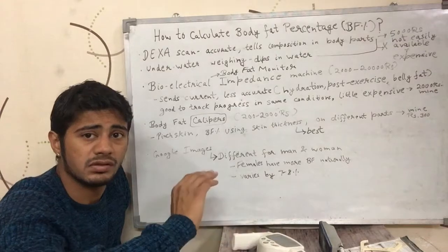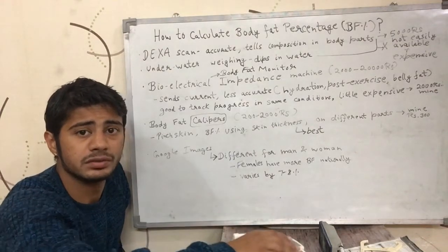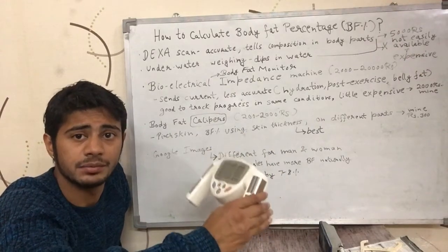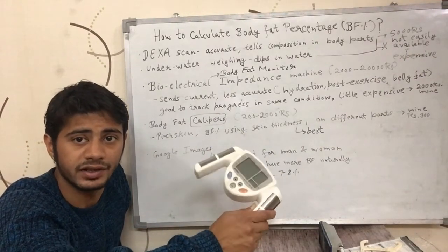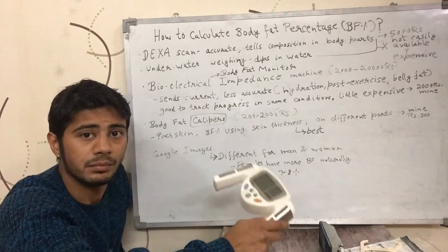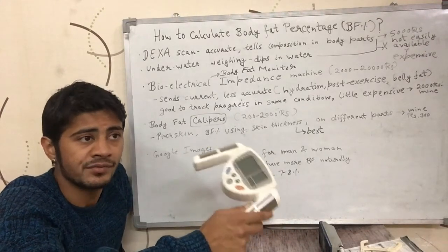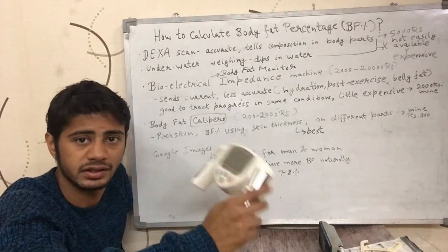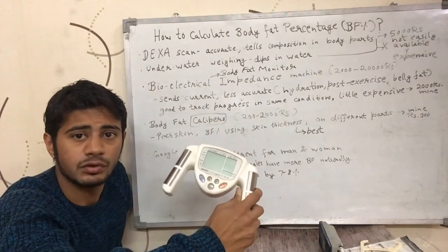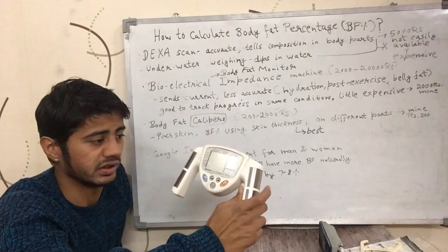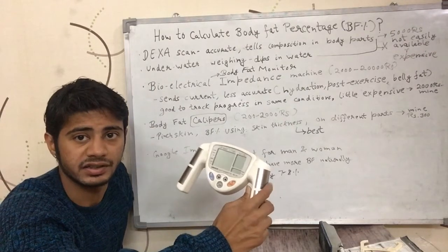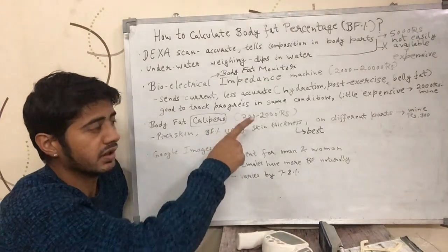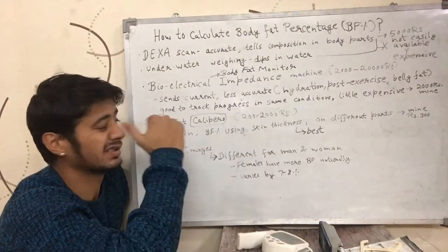Make sure that every time you measure with this machine you are in the same conditions — for example, waking up in the morning, not eating or drinking anything, after getting fresh. It doesn't make much sense to measure after exercise because it gives very different readings. And as I mentioned, I got this machine for 2,000 rupees, so it is also a little expensive for a common person.